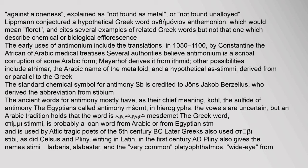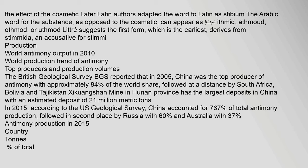The ancient words for antimony mostly have, as their chief meaning, the sulfide of antimony. The Greek word stimmi was used by Attic tragic poets of the 5th century BC. Later Greeks also used stibi, as did Celsus and Pliny writing in Latin. In the 1st century AD, Pliny also gives the name stimmi, alabaster, and other forms. Later Latin authors adapted the word as stibium, and the Arabic word for the substance can appear as ithmid, athmud, othmod, or uthmod.